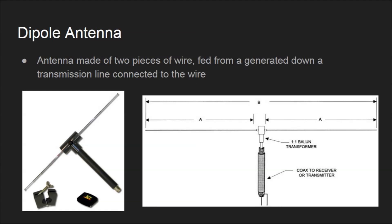Dipole antennas are just like monopole antennas, except dipole antennas use two pieces of rods instead of one. As you can see in the picture below to the left, the dipole antenna has two rods and has a coax to transmit and/or receive data on the bottom. The picture on the right is a description behind the design.